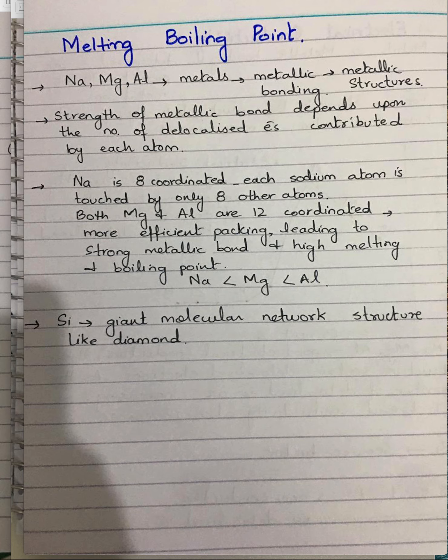Another important factor is that sodium is 8-coordinated, meaning each sodium atom is surrounded by only eight other atoms. In the case of magnesium and aluminium, it is 12-coordinated, meaning each magnesium or aluminium atom is surrounded by 12 nearest neighbors. So it is clear that magnesium and aluminium have closer packing and more efficient packing, resulting in a stronger metallic bond. These two factors are responsible for the increase in melting and boiling points from sodium to aluminium.